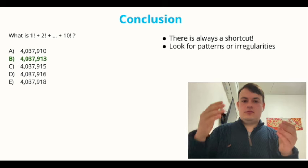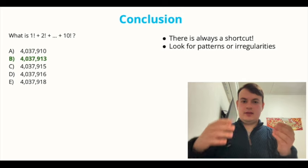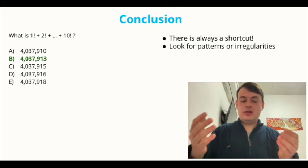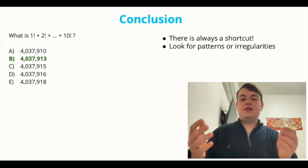Then we added up the remaining factorials from 1 to 4. We saw that the sum ends with a 3. And we concluded that the overall sum of 10 factorials also ends with a 3. This gave us the correct answer, B.